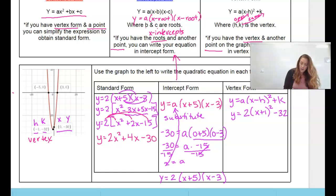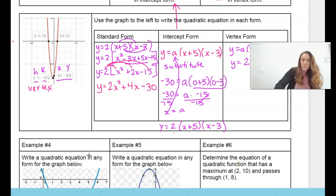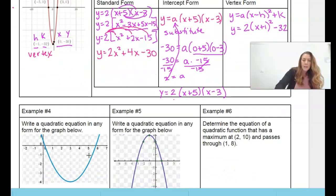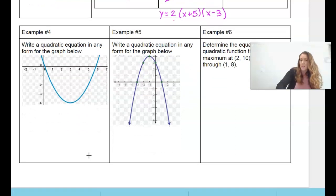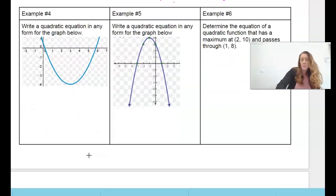So notice our a value is 2, a value is 2, a value is 2. Nothing else really looks the same, but if I did plug in zero, I would get negative 30, and that's on our graph. So all of these equations look different, but they are all the same graph. They're just different forms. So then what's going to happen is I'm going to give you a graph, and then you get to pick. So it really depends on the information that you have, which one's probably going to be easier. So I'll kind of talk you through that.